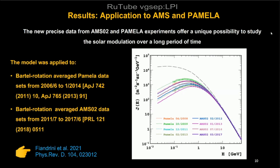We now apply AMS and PAMELA data to this model in order to find the best-fit parameters for the diffusion coefficient for each month from 2007 to 2017, covering the lifetime of PAMELA and AMS. The model is fitted to selected data points from both PAMELA and AMS, and both datasets are fitted well with the model, allowing us to extract those parameters.